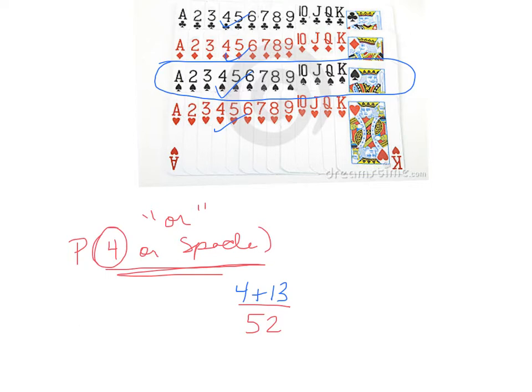There are not, in fact, 17 cards, and I can count them. If you count 13 spades plus the four of hearts plus the four of diamonds plus the four of clubs, that's 16 cards.